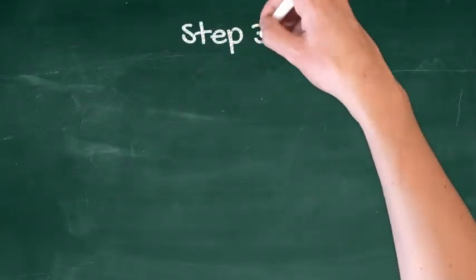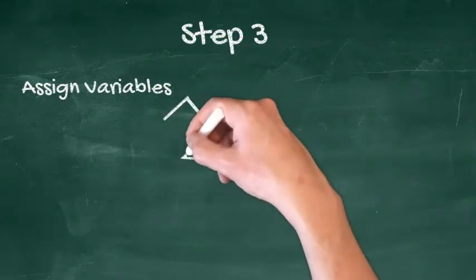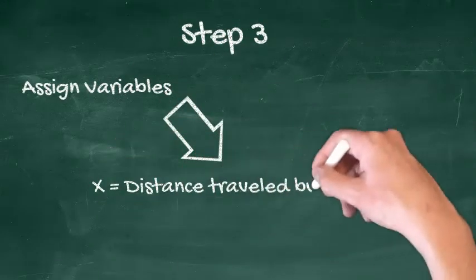Step 3. Assign a single letter to represent each unknown. You may want to note the unknown that each letter represents so you don't get confused.